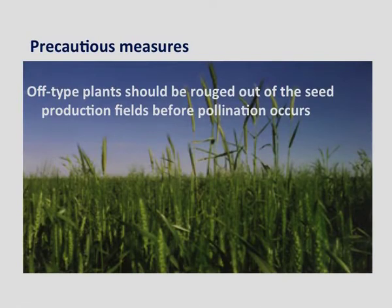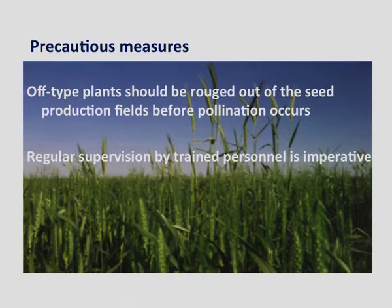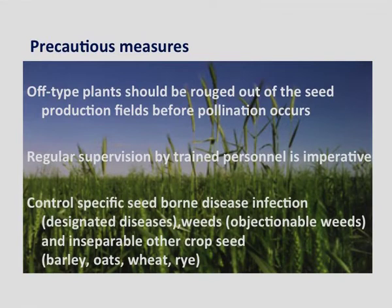A precautionary measure of off-type plants should be rouged out of the seed production fields before pollination occurs. Regular supervision by trained personnel is imperative, and it may be necessary to control specific seed-borne disease infections like designated diseases, objectionable weeds, and inseparable other crop seeds. Other heritable variations due to recombination and polyploidization may also take place in varieties during seed production, which can be avoided by periodical selection during maintenance of the seed stock.